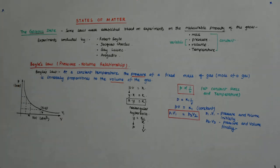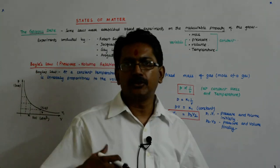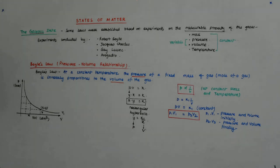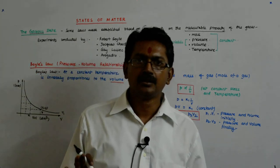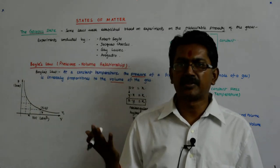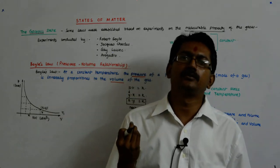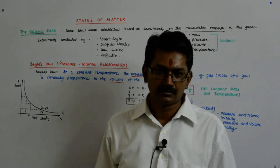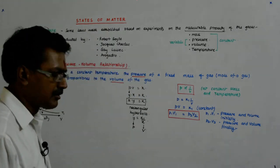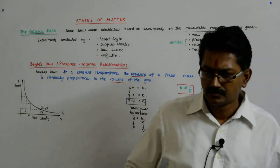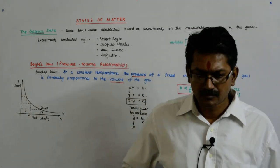If this curve is at some temperature t1, and I increase the temperature — keeping pressure times volume constant — in what direction will it shift? Will it become a straight line at a higher temperature? No. Why? Because increasing temperature does not break the isothermal relationship on its own.